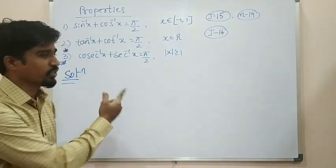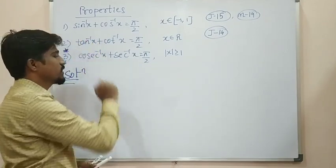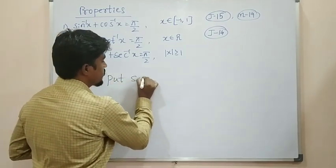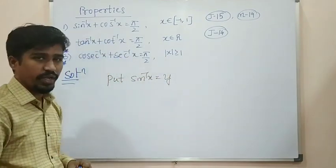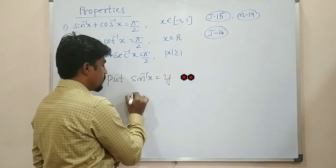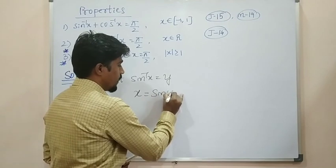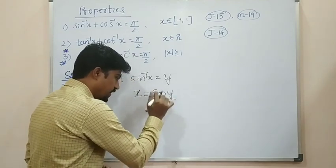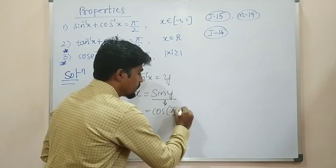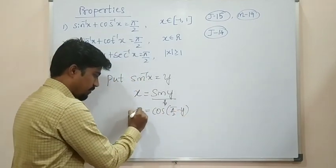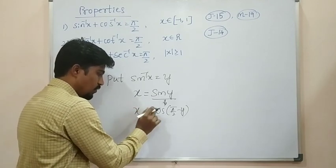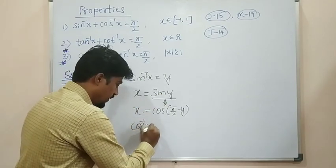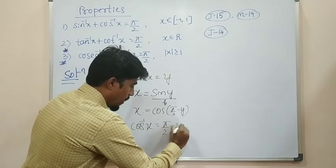Every step will be answered. We will try to prove it. First, the LHS side is sin inverse x plus cos inverse x. Put sin inverse x equal to y. Sin inverse x is equal to y at the substitution point. By the inverse function to normal function, x is equal to sin y. Now at trigonometry, using the complementary angle identity, sin y can be written as cos of π/2 minus y. So x is equal to cos of π/2 minus y.